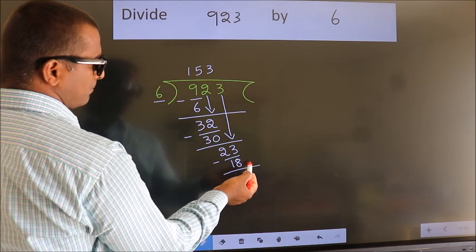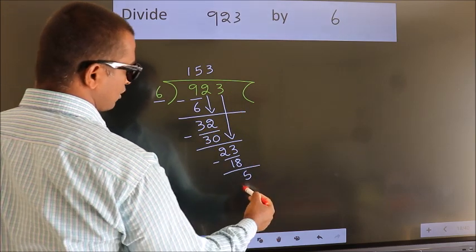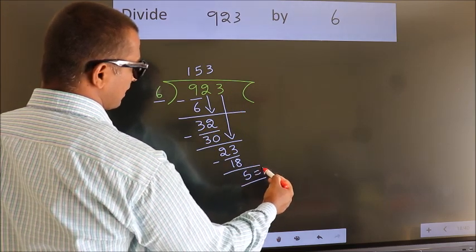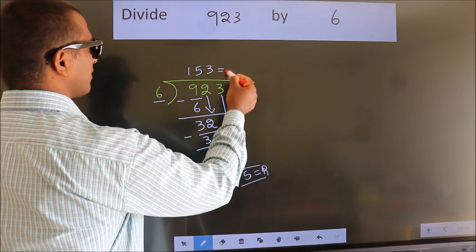No more numbers to bring down. So, we stop here. This is our remainder. This is our quotient.